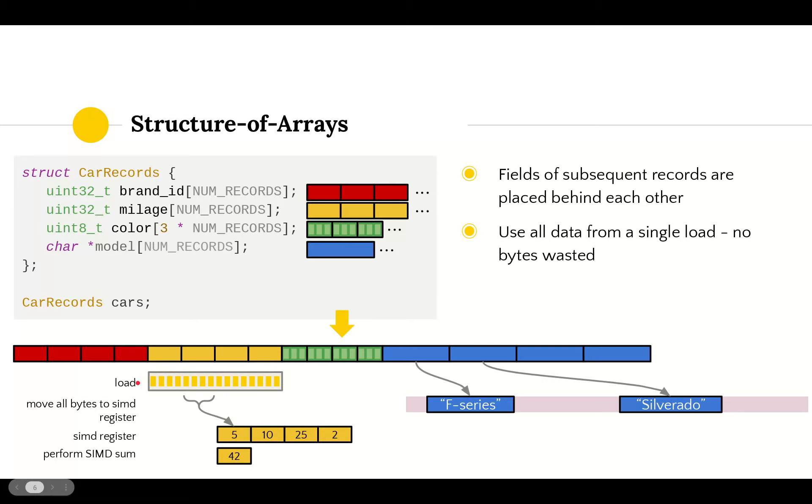We can just move those to the SIMD register right away and perform the sum. That's much faster and more efficient than having to do four separate loads, loading four separate cache lines with information we don't need before we can perform the SIMD operation. We just used all data from a single load and wasted no bytes.